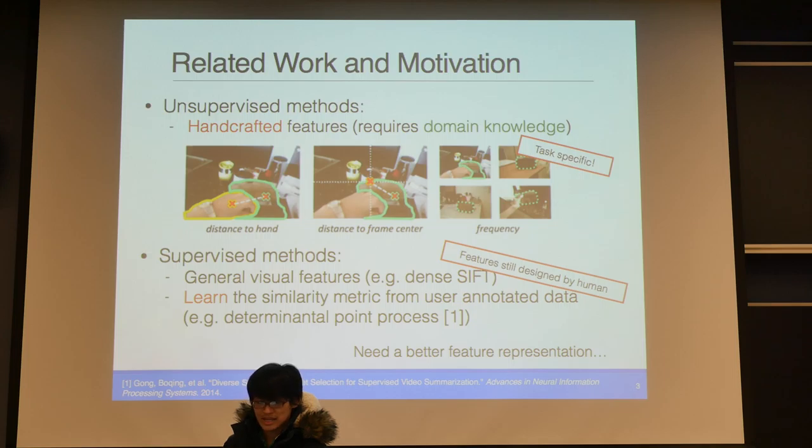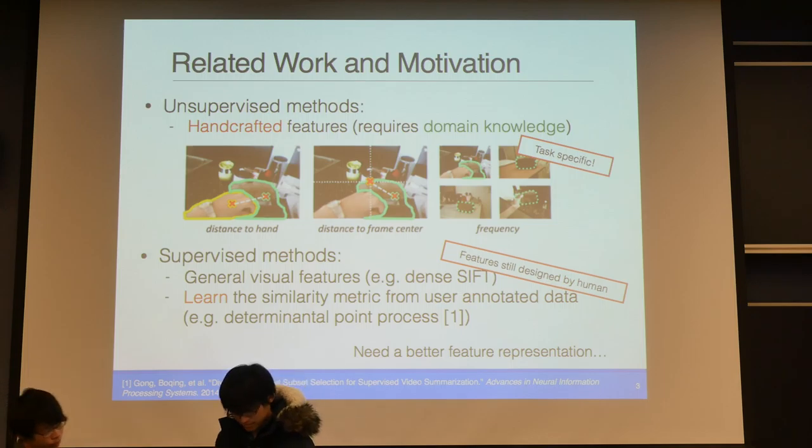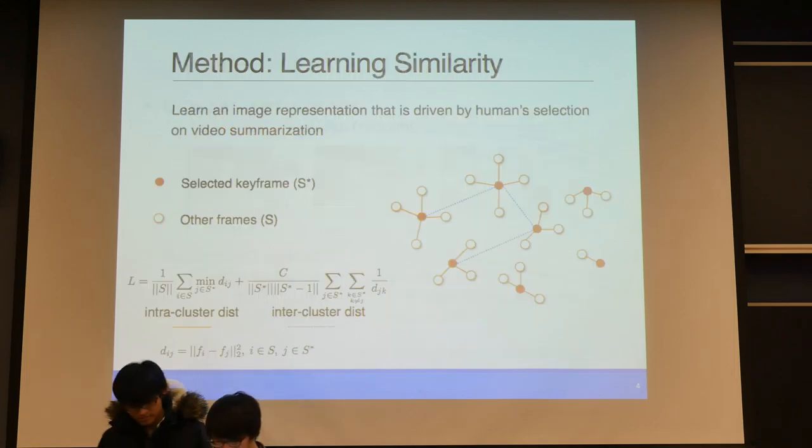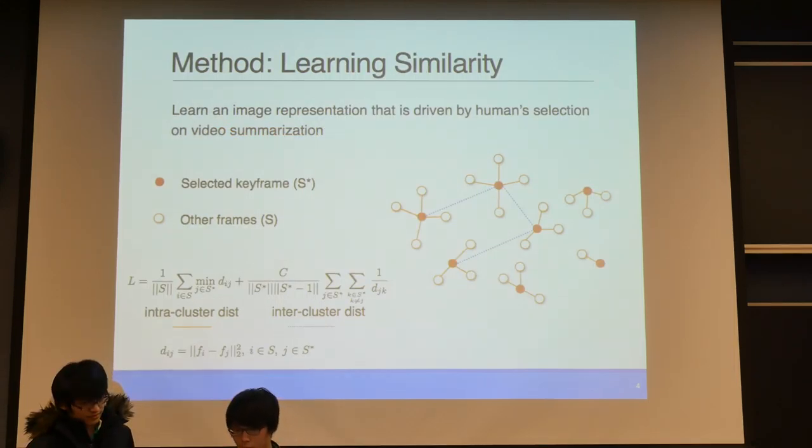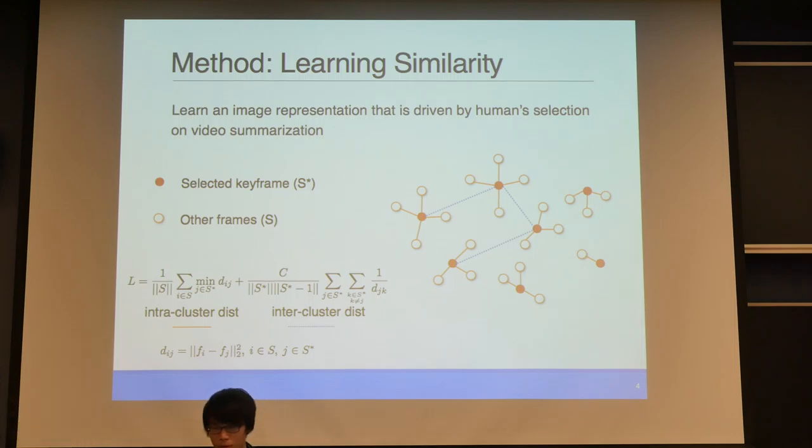The other way is using supervised methods. When we use supervised methods, we tend to use more general visual features to represent a frame, like dense SIFT. Then we try to learn from the ground truth how they measure the similarity between different frames. However, even though these visual features are much more general, they are still designed by humans and somehow we will lose some information. So here we propose to use deep neural networks to get a better representation of the original frame and try to capture other information that we lost before.